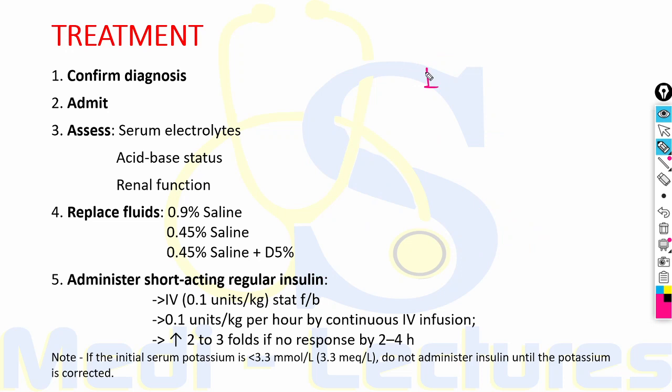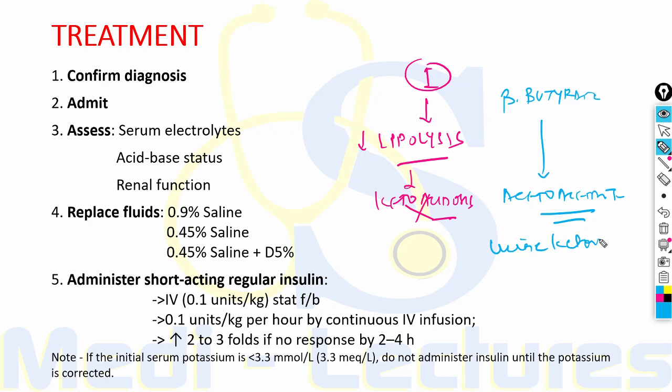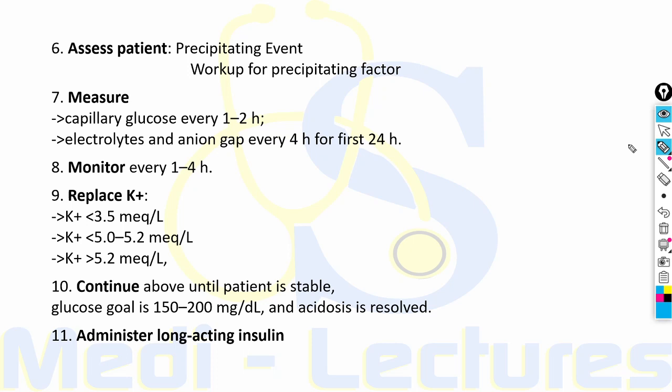When insulin is given in DKA, lipolysis decreases and ketoacidosis gradually resolves. During this resolution phase, the major ketone body beta-hydroxybutyrate is converted to acetoacetate. Therefore, during the resolving phase, urine dipstick tests may show strongly positive ketones — because they detect acetoacetate, which is now increasing.